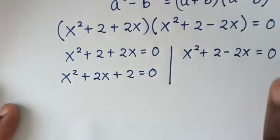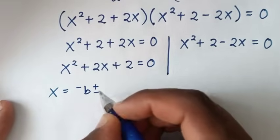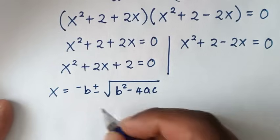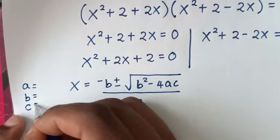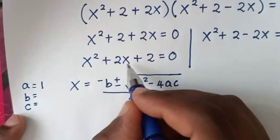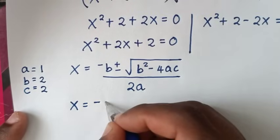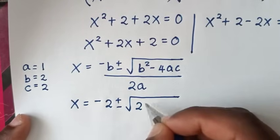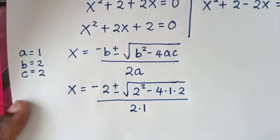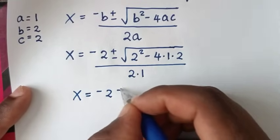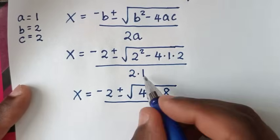Now to solve this quadratic equation, we'll use the quadratic formula: x = (−b ± √(b² − 4ac)) / 2a. Here a is the coefficient of x², which is 1; b is the coefficient of x, which is 2; and c is the constant, which is 2. So it will be x = −2 ± √(2² − 4·1·2) over 2·1, giving x = −2 ± √(4 − 8) over 2.